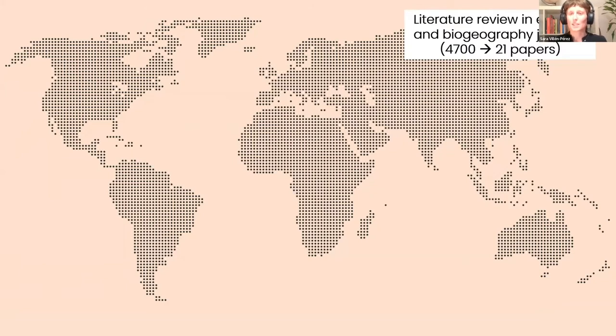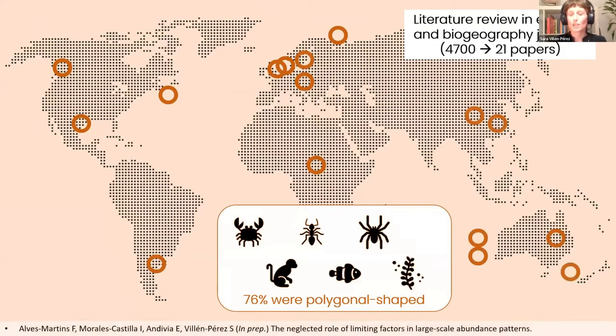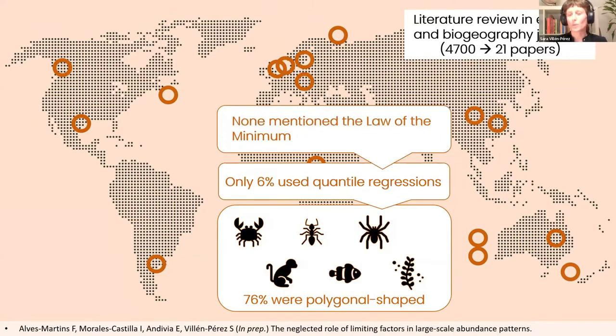We then made a literature review in ecology and biogeography journals, and we found 21 papers which had this abundance-environmental plot with point clouds that we could assess. We found that 76% of these point clouds were actually polygonal-shaped, for a variety of organisms distributed all across the world.